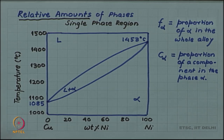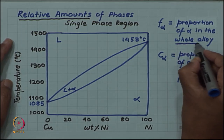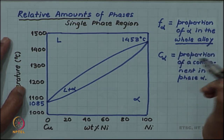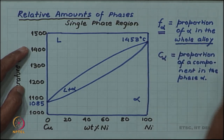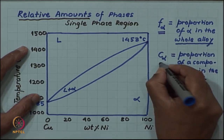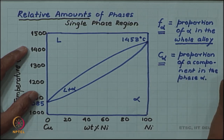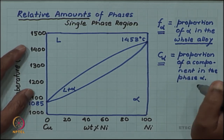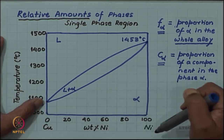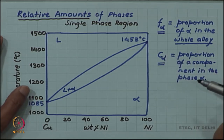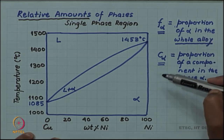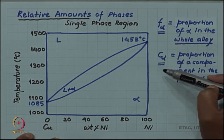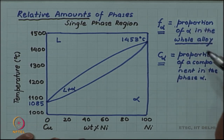The reference for relative amount is the whole alloy — we are trying to find what proportion of the whole alloy is the alpha phase. Whereas for composition, the focus is on the alpha phase and we are trying to find the proportion of, say, copper and nickel in the alpha phase. So, relative amount should be distinguished from composition, although both are a kind of proportion and both can be expressed as fraction or percentage.